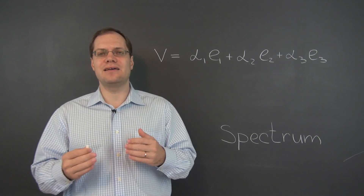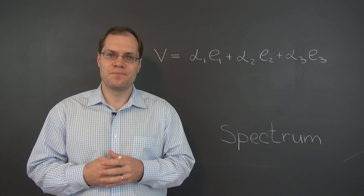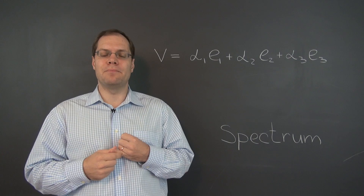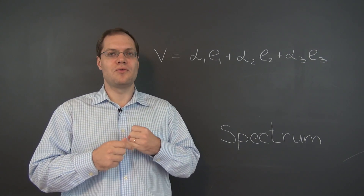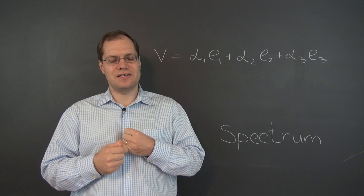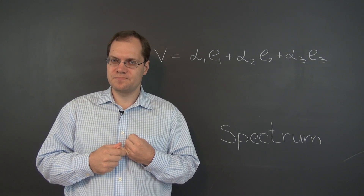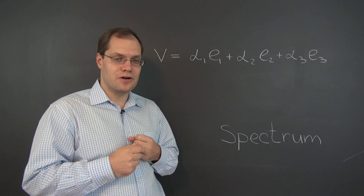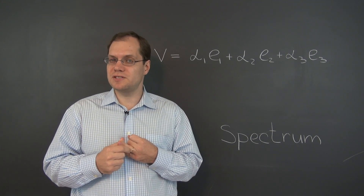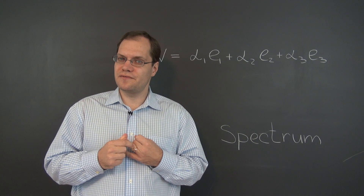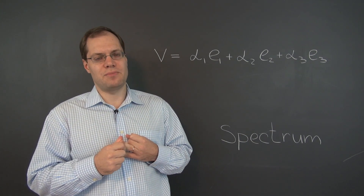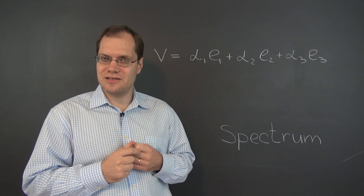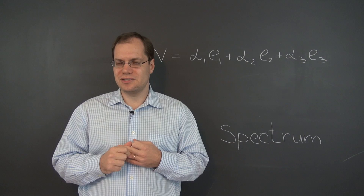Let's talk about how many eigenvalues and eigenvectors there are. We've experienced different scenarios. We've seen some linear transformations with as many eigenvalues and eigenvectors as the dimension of the space. We've seen transformations with fewer, namely the derivative when it came to the space of polynomials. And finally, we saw linear transformations like the rotation in the plane with no eigenvalues and eigenvectors.